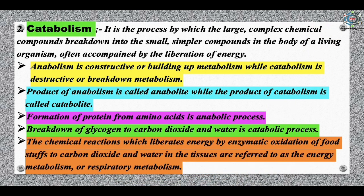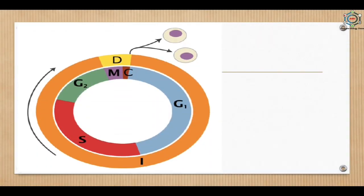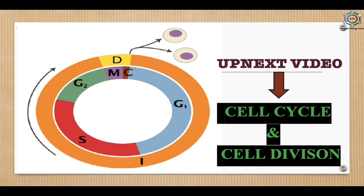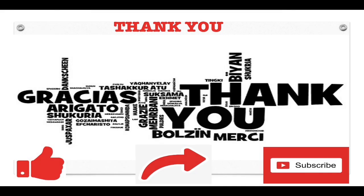The chemical reactions that liberate energy by the enzymatic oxidation of foodstuffs to carbon dioxide and water in the tissues are referred to as energy metabolism or respiratory metabolism. This concludes the lecture on enzymes, covering factors affecting enzyme activity, properties of enzymes, nomenclature, classification, and mode of action. The next video will be on the cell cycle and cell division. If you liked this video, please like, share, and subscribe to my channel Anugma Biology Classes. You can ask questions and suggestions in the comment section below. Thank you for watching.